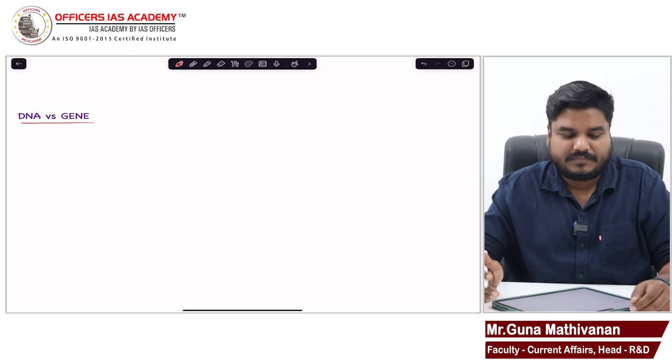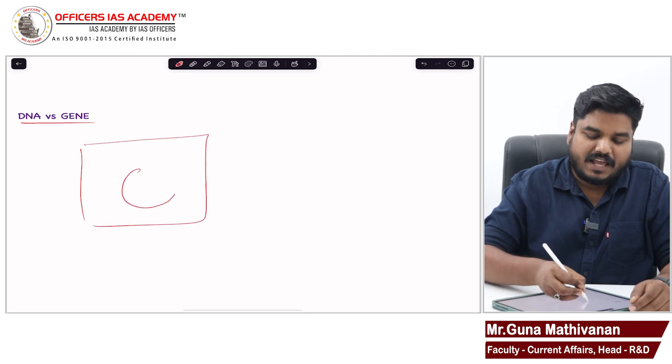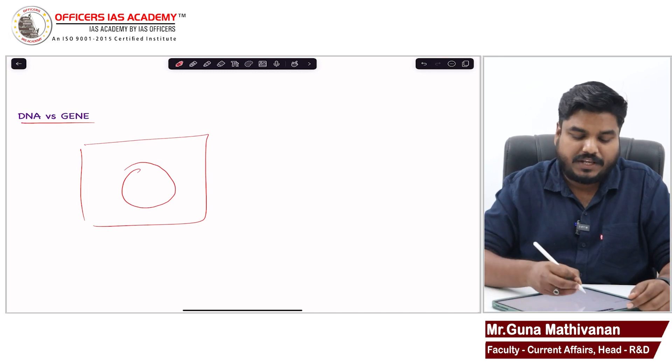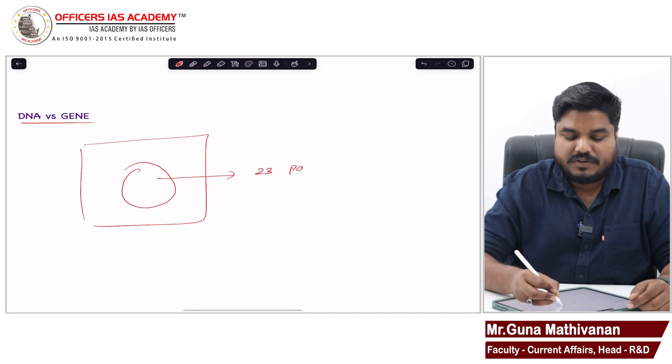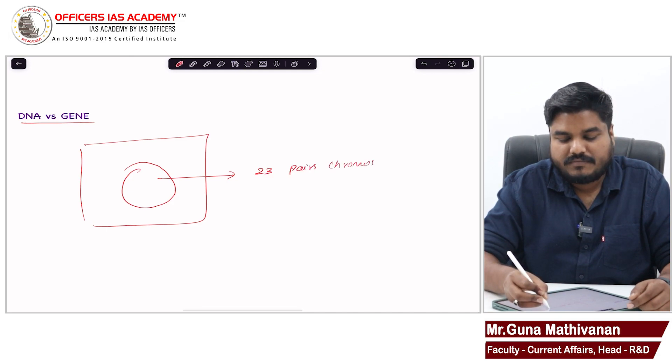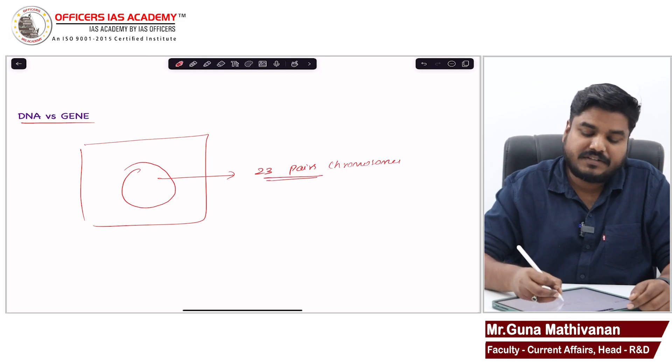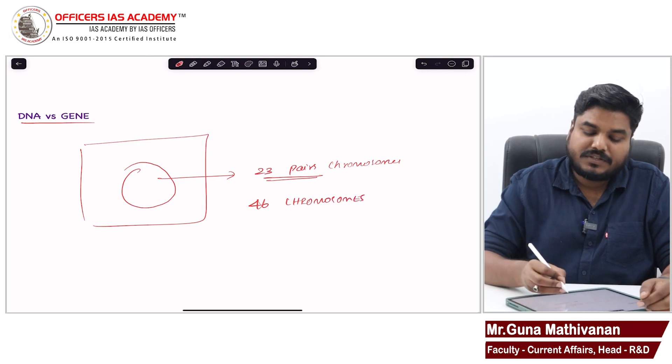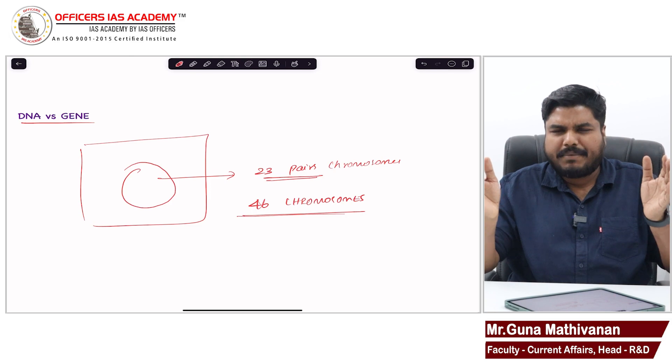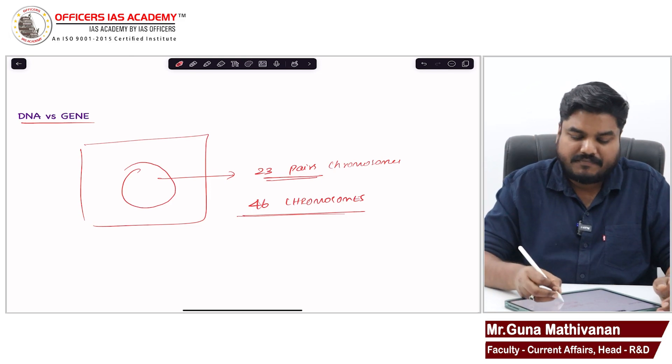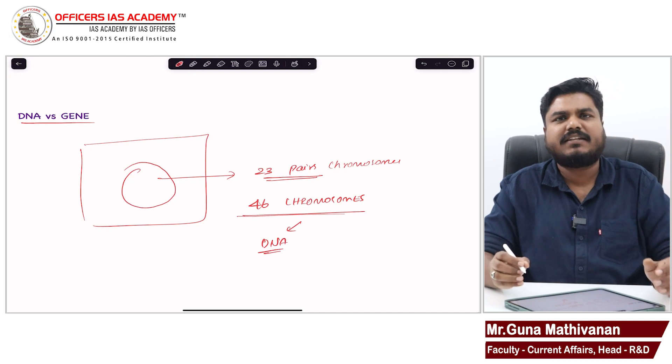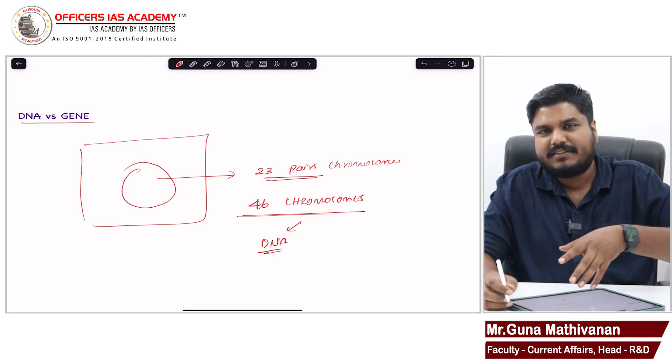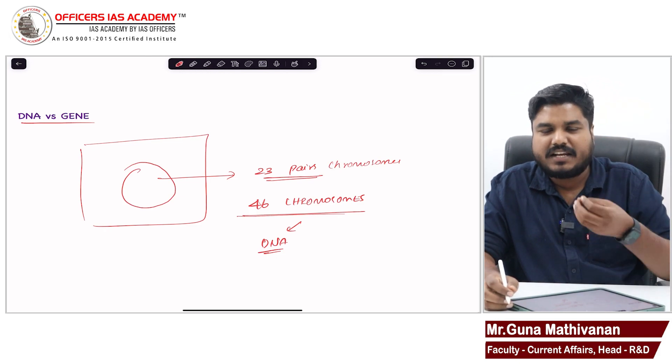Each cell will have a nucleus. Inside the nucleus we have chromosomes. If we take humans, we have 23 pairs of chromosomes - that means 46 chromosomes. These chromosomes are nothing but compressed, condensed DNA. This DNA contains all the information related to our life.